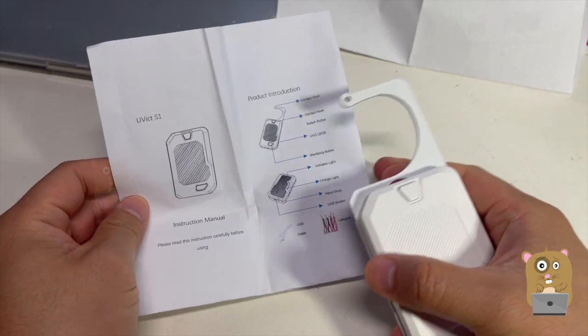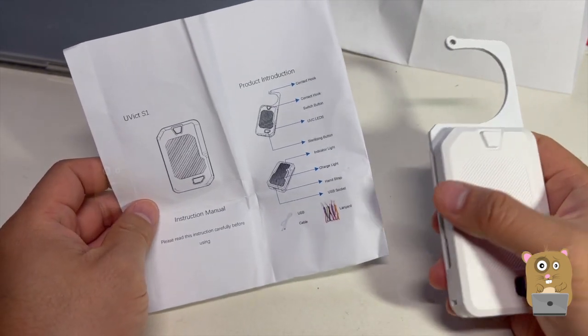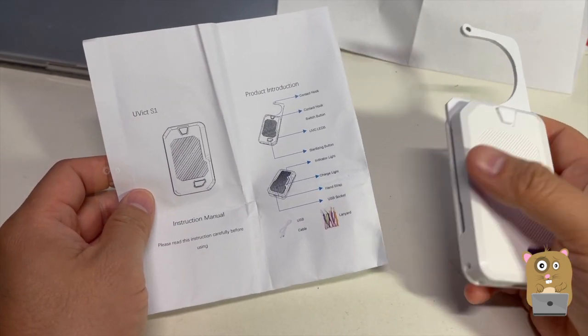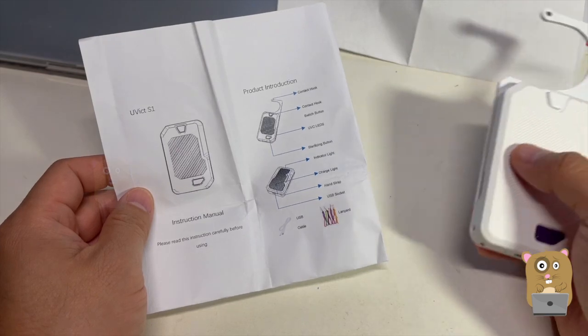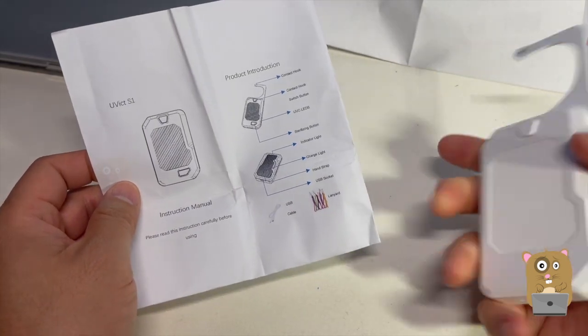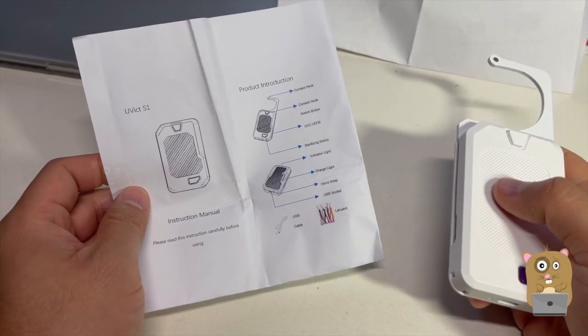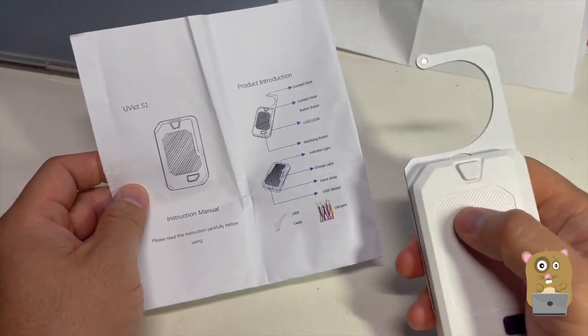For homes or any other residences where they have a turn knob, this does not work with it. Any of the businesses, the town hall, any of the recycling centers, they have more essentially ADA approved handles. So it works with this.